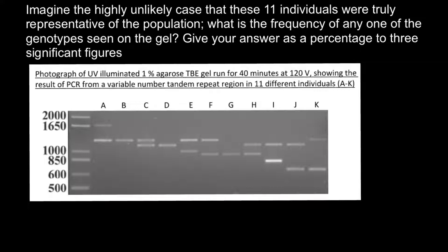Today's problem is: imagine the highly unlikely case that these 11 individuals were truly representative of the population. What is the frequency of any one of the genotypes seen on the gel? Give your answer as a percentage to three significant figures.